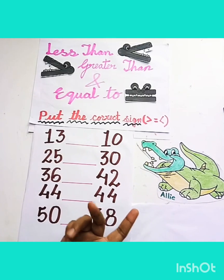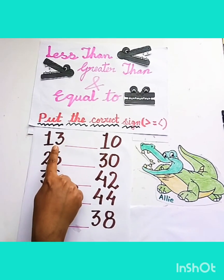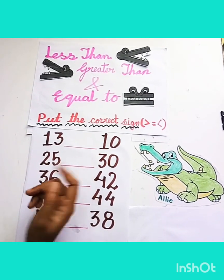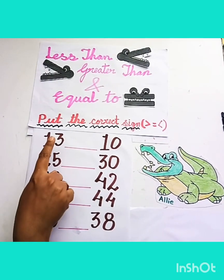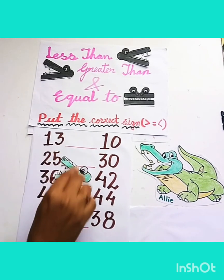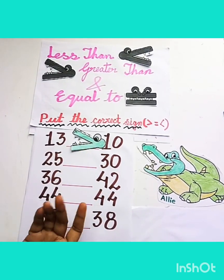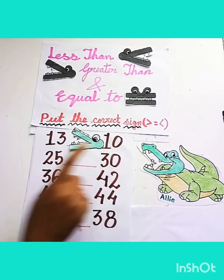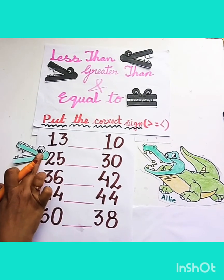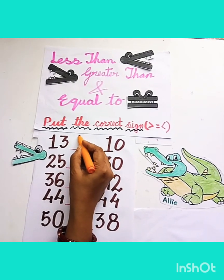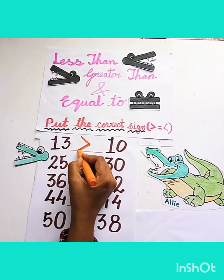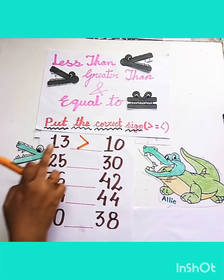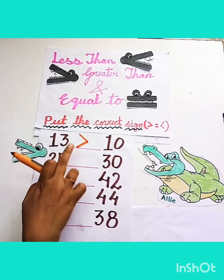Now, tell me children, which number will she eat? Number 13 or number 10? Which number is biggest? That's right — number 13. Like this. Because 13 is bigger than 10. For the greater than sign, we put this sign — like Ellie's mouth. The open end goes to the bigger number.